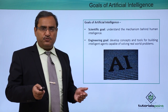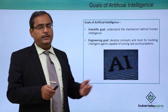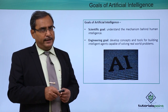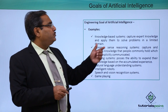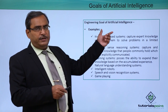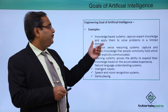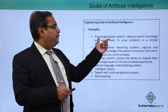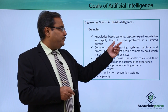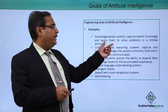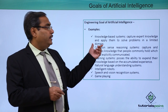In our tutorial we have solved so many real world problems using artificial intelligence. Now, examples of goals of artificial intelligence: knowledge-based systems capture expert knowledge and apply them to solve problems in a limited domain.